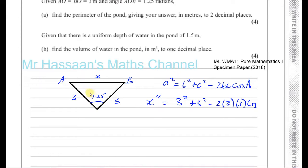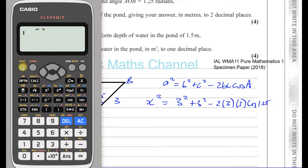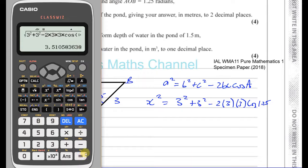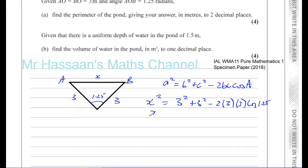This angle is in radians as stated in the question, so make sure your calculator is in radian mode. X is the square root of 3² + 3² - 2(3)(3)cos(1.25), which gives 3.5105. Since this is not our final answer, store this value as A.